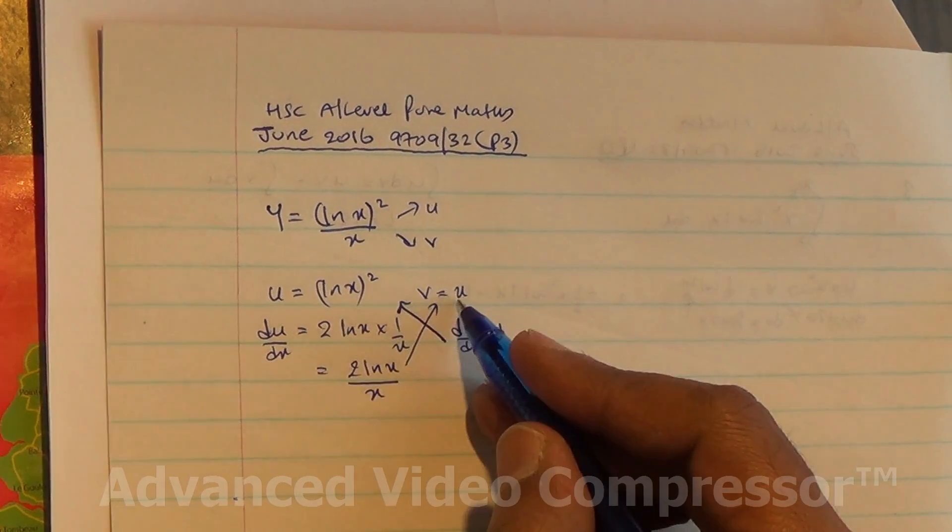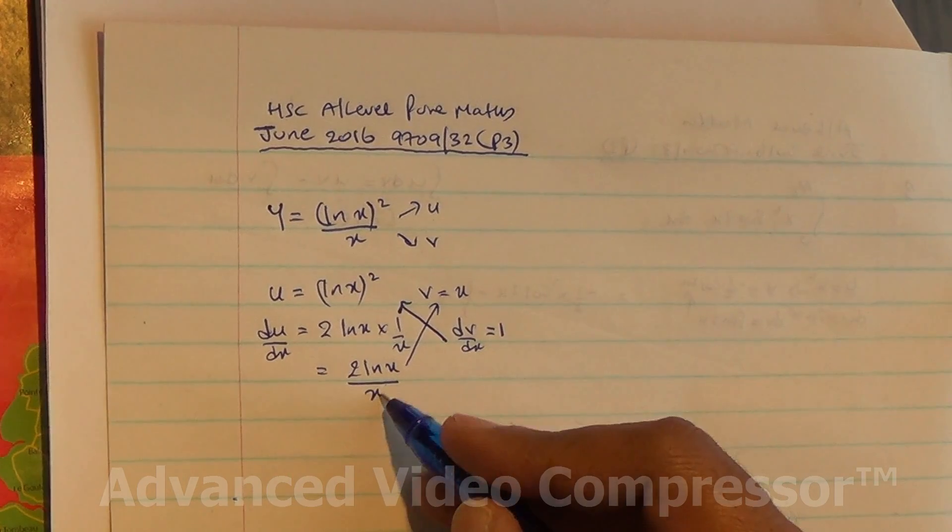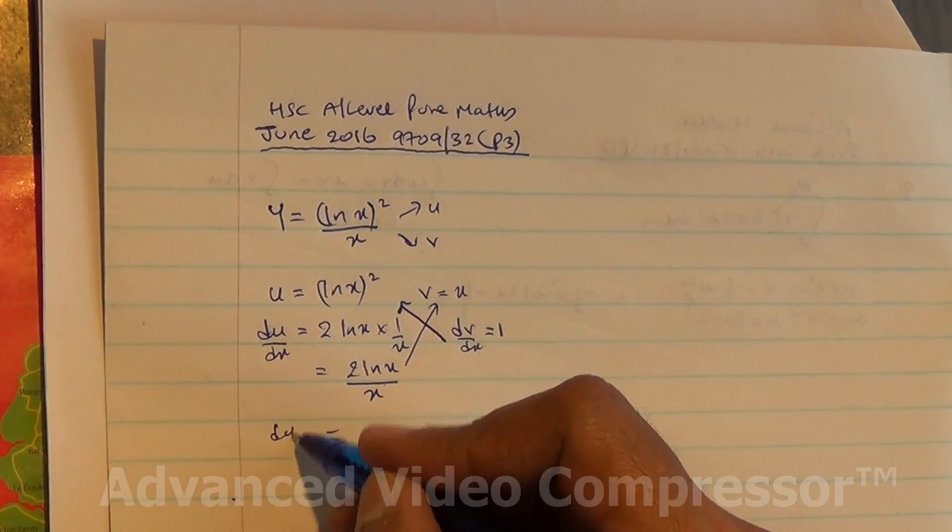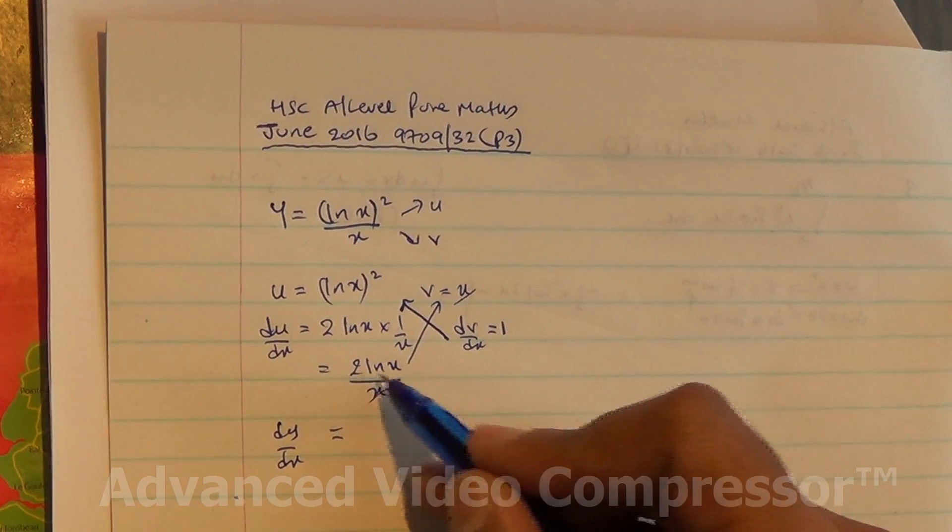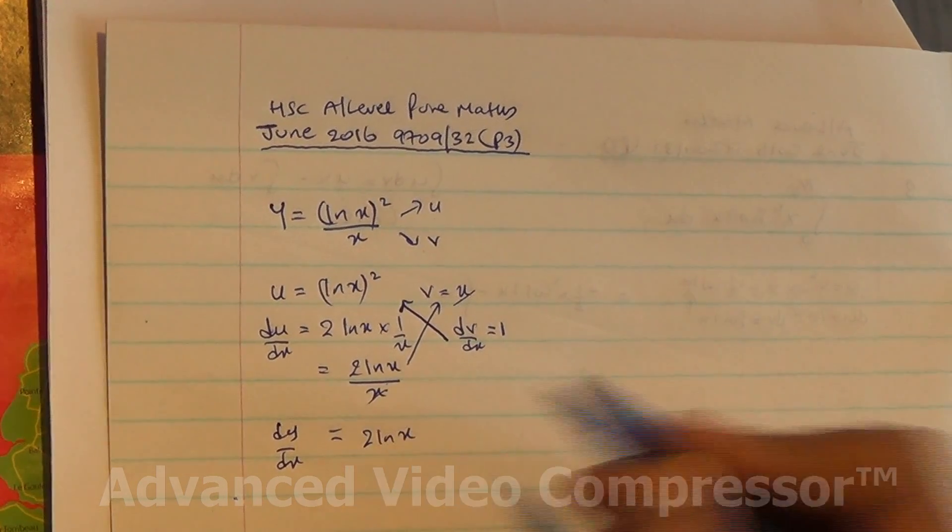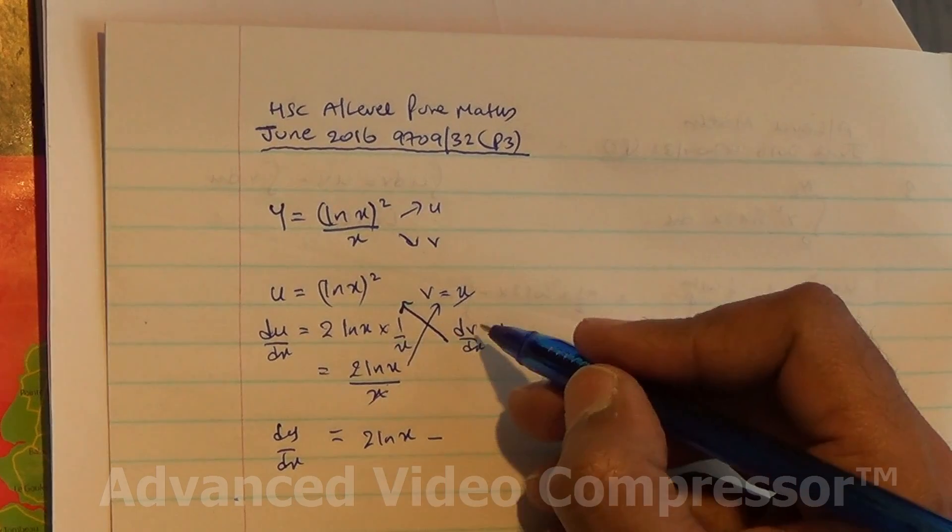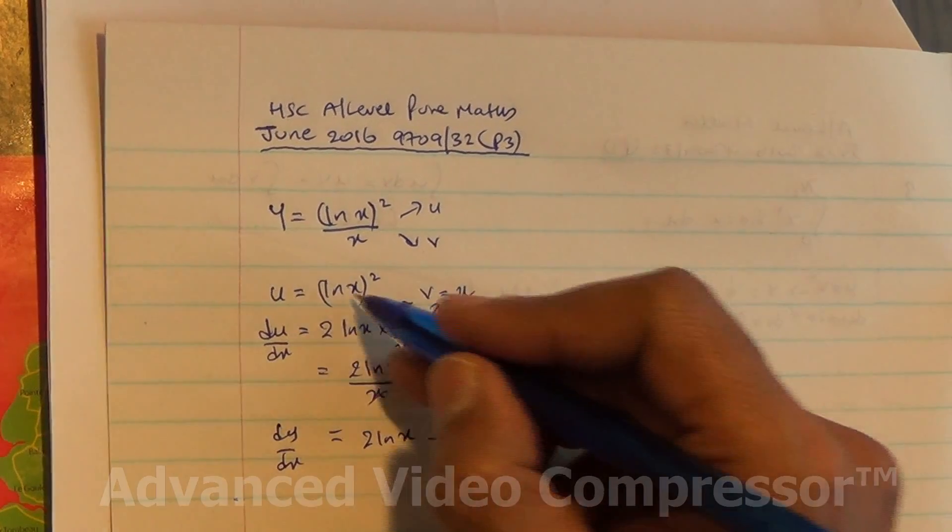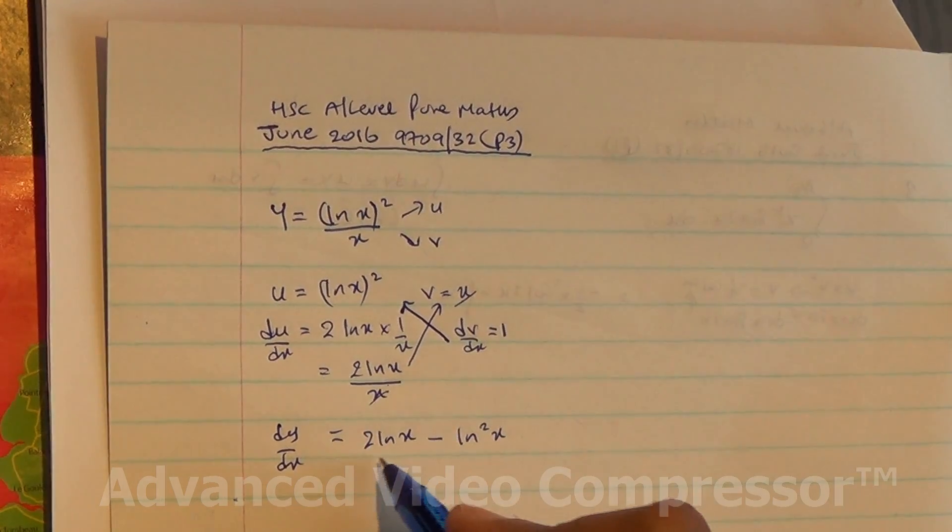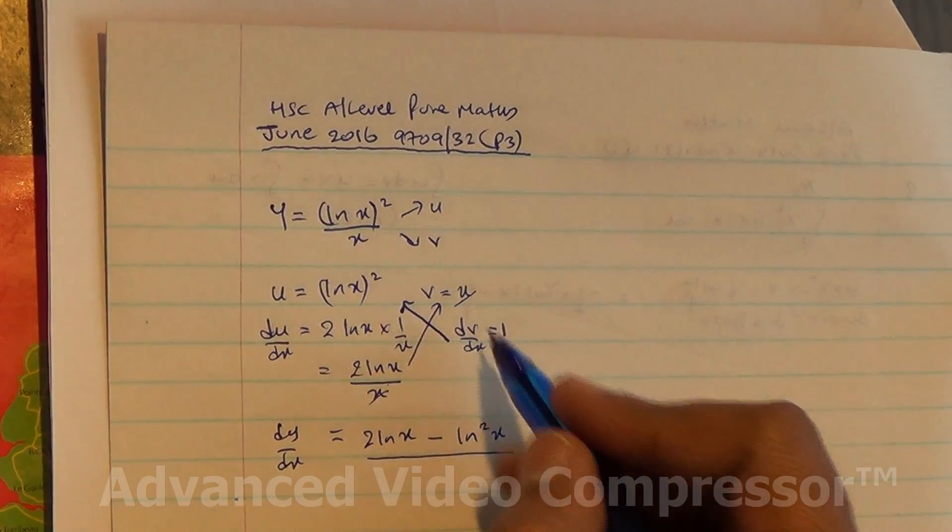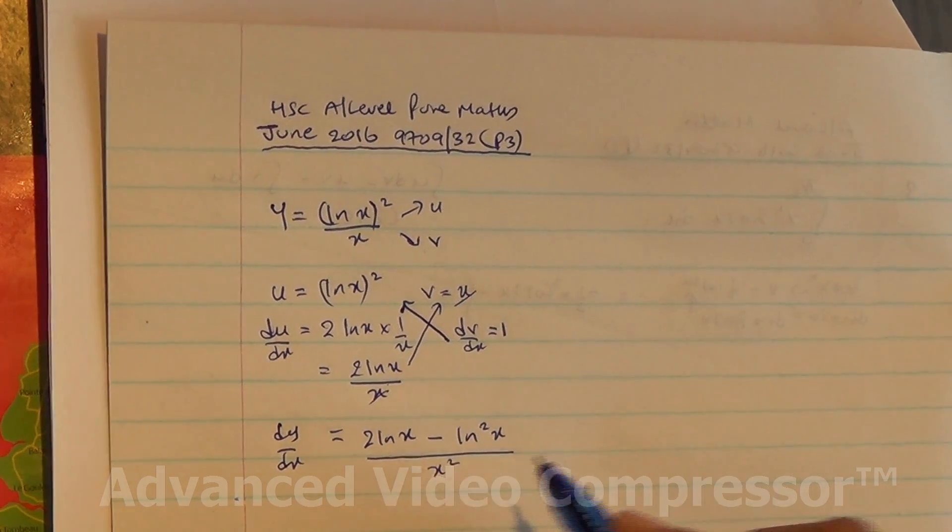So v du/dx is x times 2 ln x over x. The x and x cancel out, giving us 2 ln x. Minus u dv/dx: 1 times (ln x)². All divided by x², which is v².